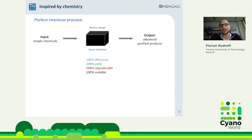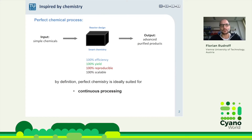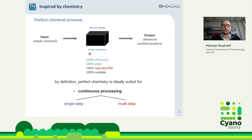We want 100% efficiency, 100% yield, and 100% reproducibility. And of course, if it's scalable, that's good for industry. If it's not scalable, it's nice to do in the lab, but at a technical university like mine, we want an application. Per definition, as a chemical process, what I described is a continuous flow process — either single-step or multi-step.